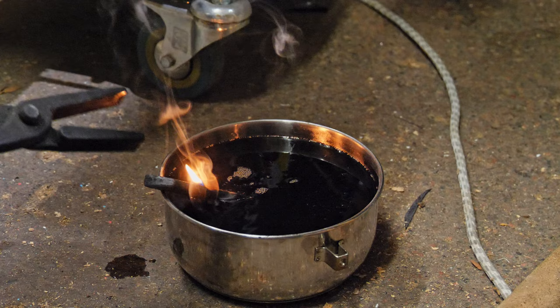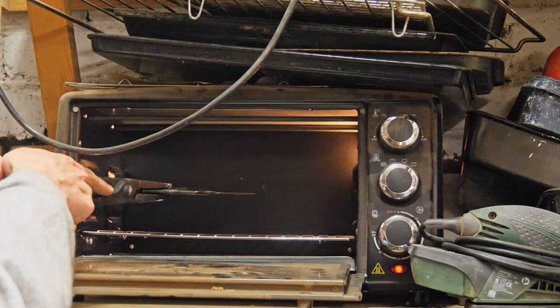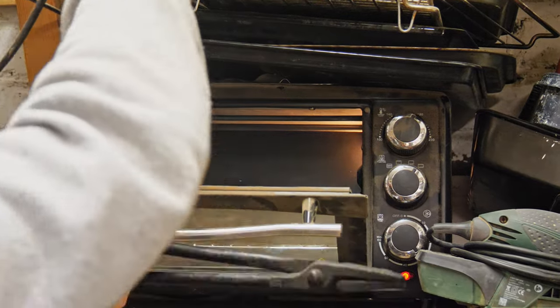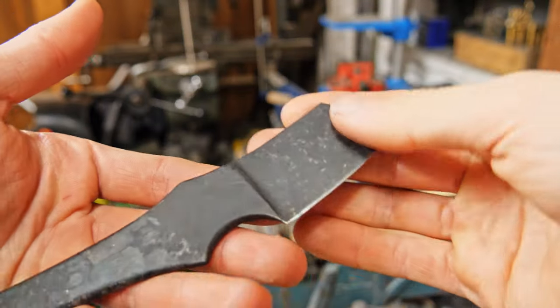During that process the metal becomes so hard that it's actually quite brittle and fragile, a bit like glass. So it's standard practice to then temper the metal down to make it slightly softer and more durable and I did this for two hours in a toaster oven at about 250 degrees celsius.